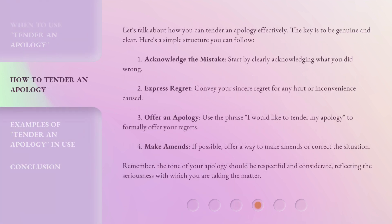Let's talk about how you can tender an apology effectively. The key is to be genuine and clear. Here's a simple structure you can follow. First, acknowledge the mistake — start by clearly acknowledging what you did wrong. Second, express regret — convey your sincere regret for any hurt or inconvenience caused. Third, offer an apology — use the phrase 'I would like to tender my apology' to formally offer your regrets.